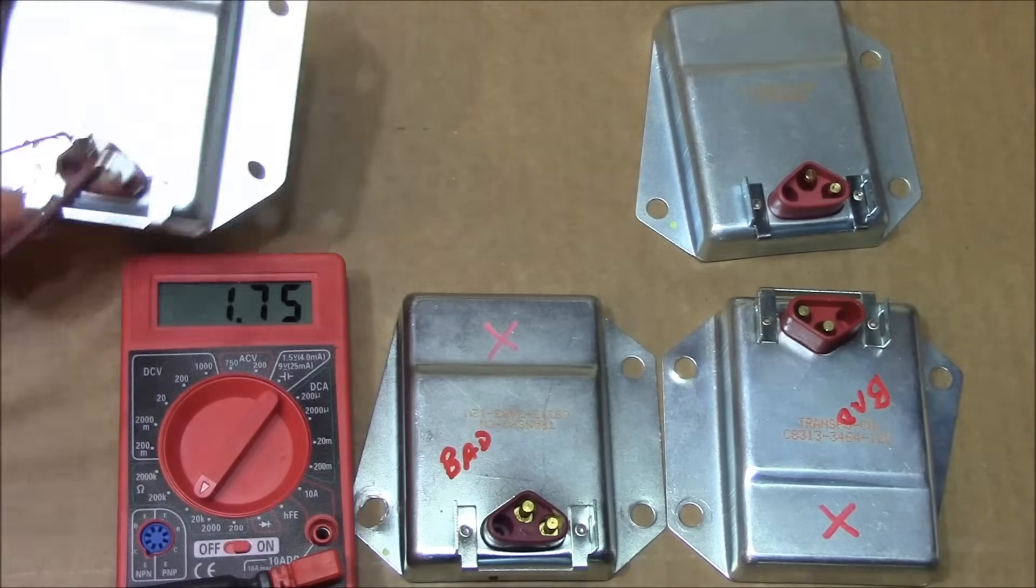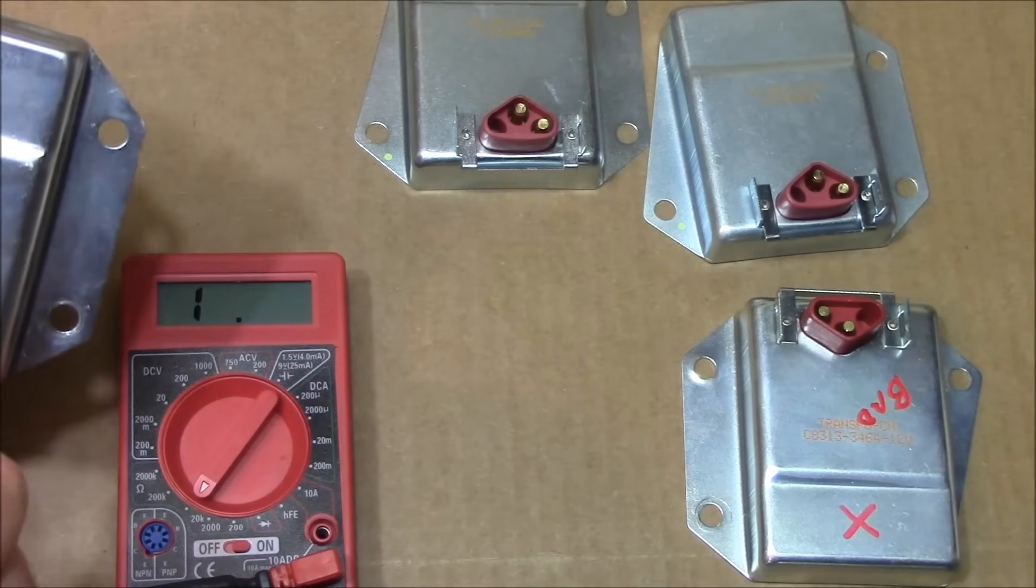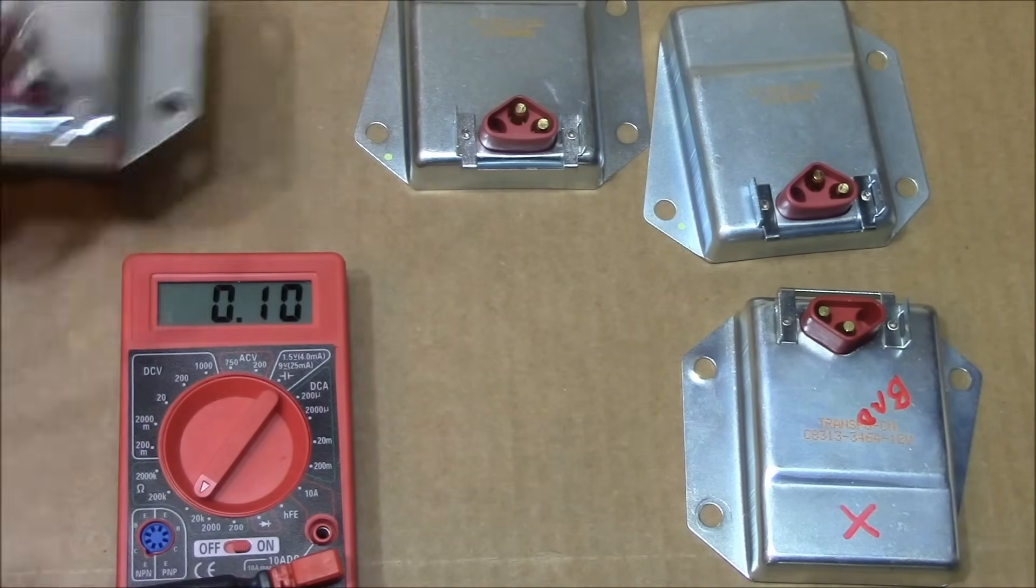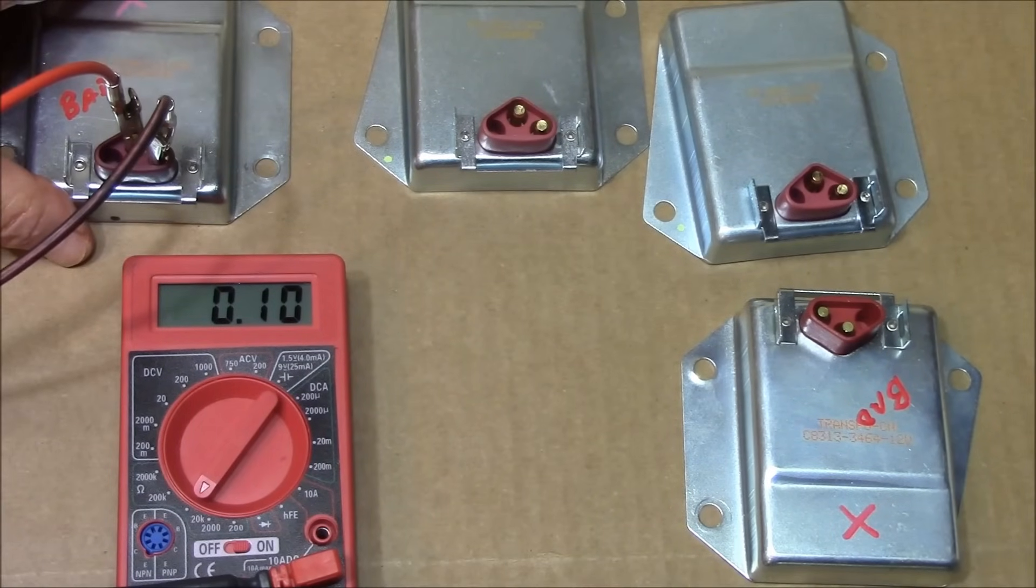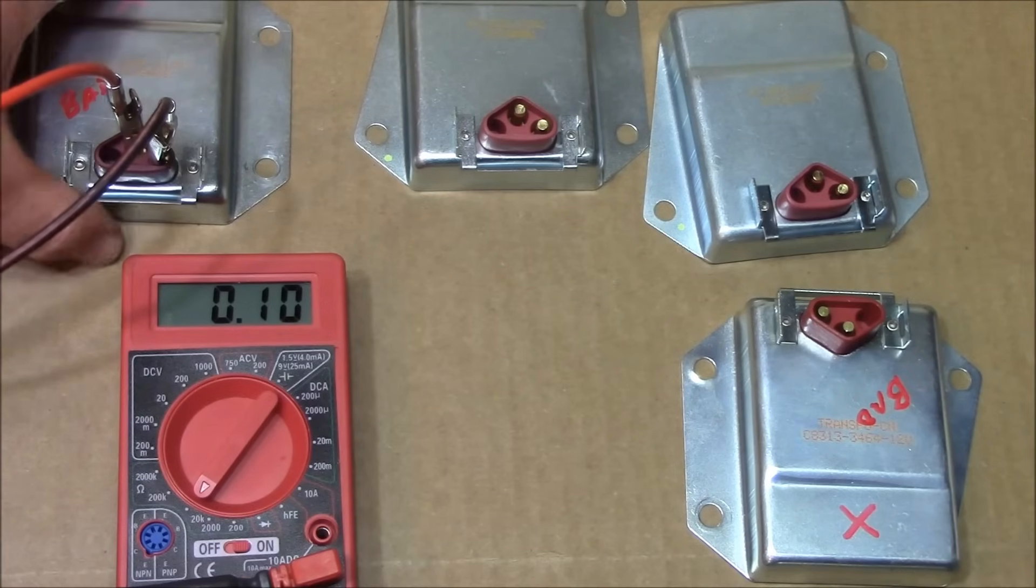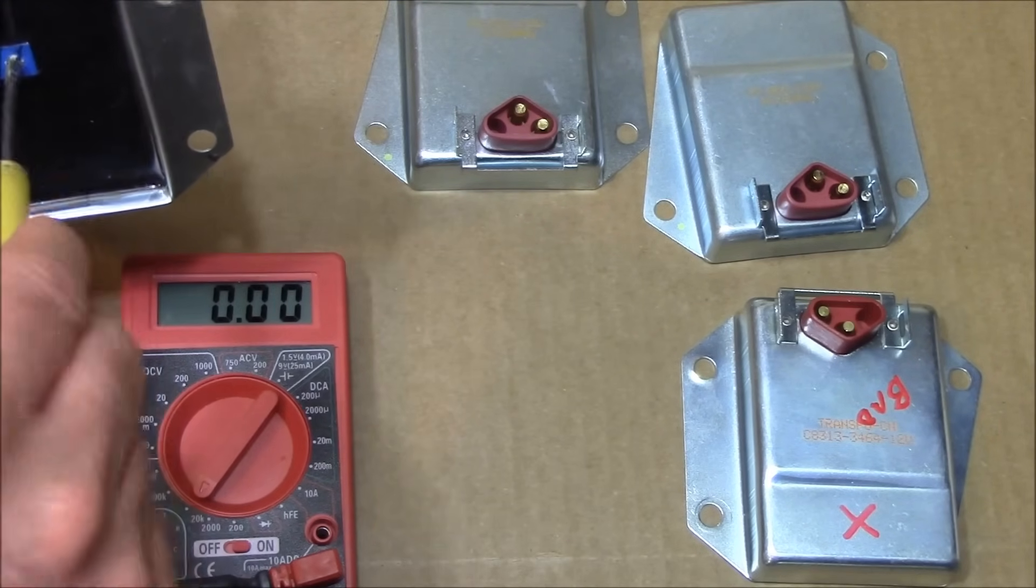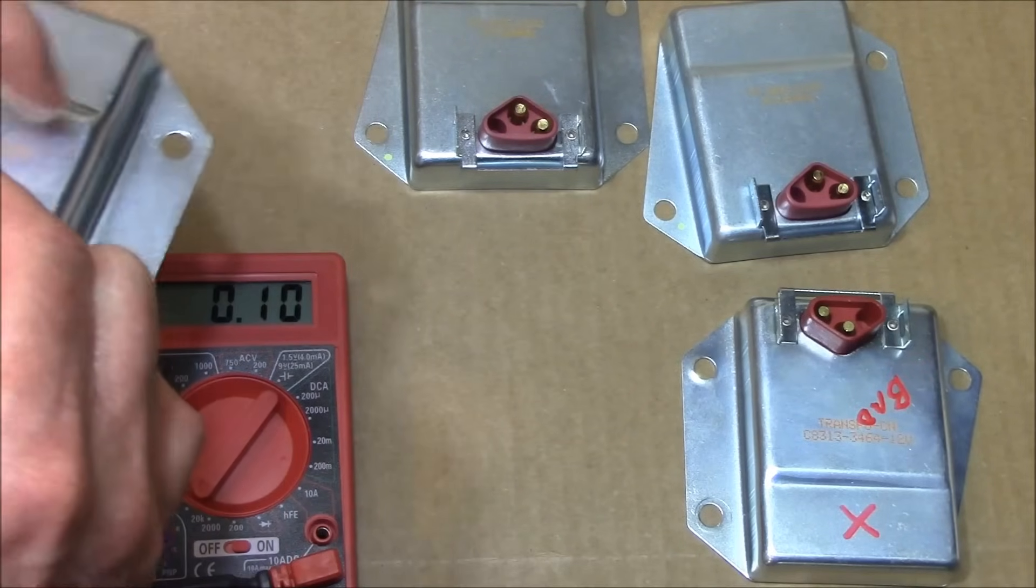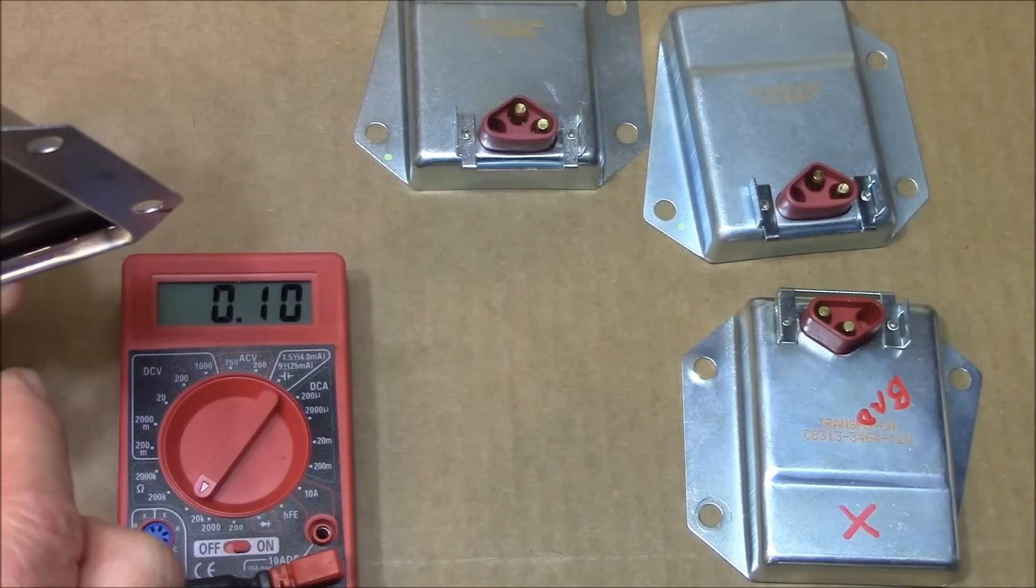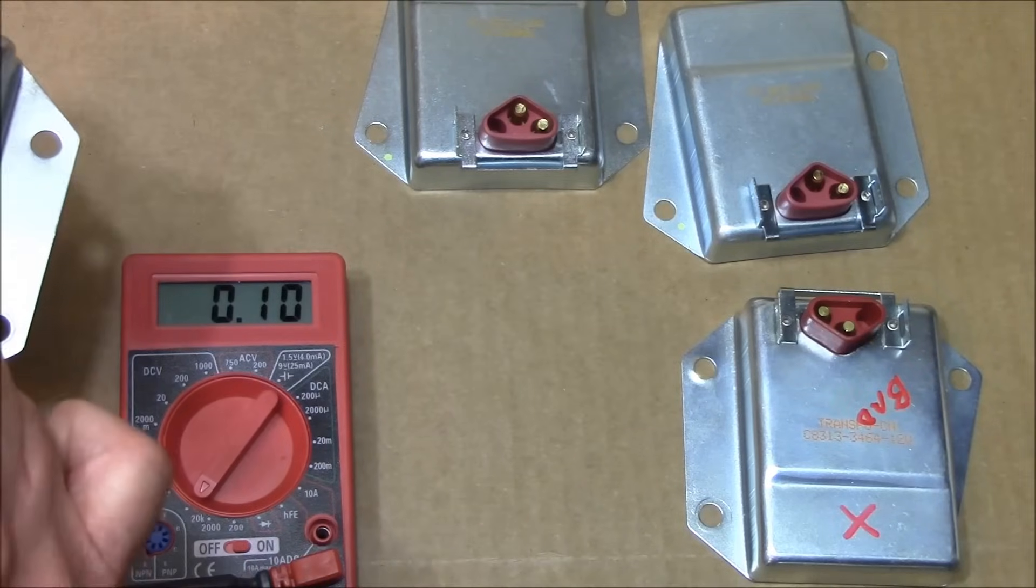So you can see what these look like if they're bad. I have several bad ones. Here's one set at 0.10 - that was definitely bad. You'll notice also, when I turn the screw on the back, nothing happens to the meter. That's a bad one.